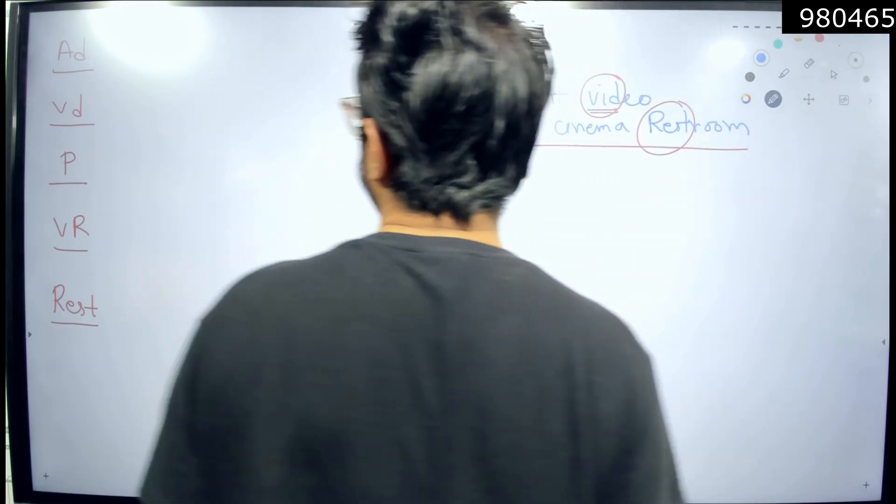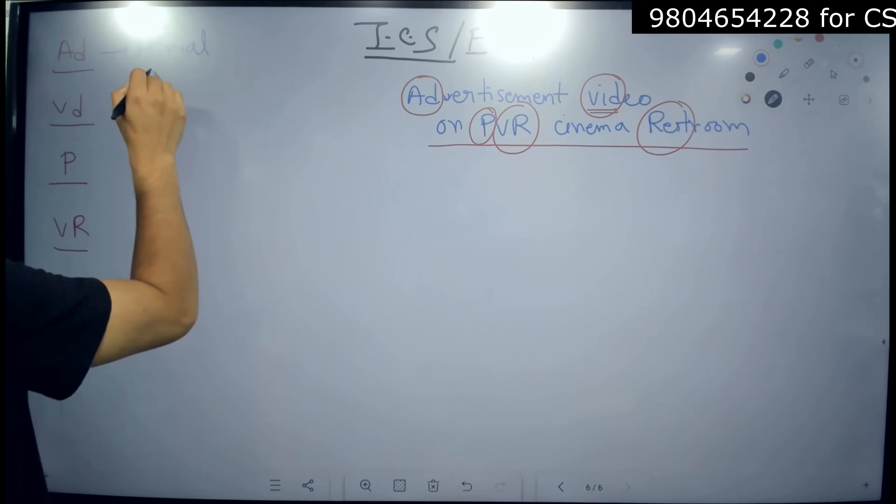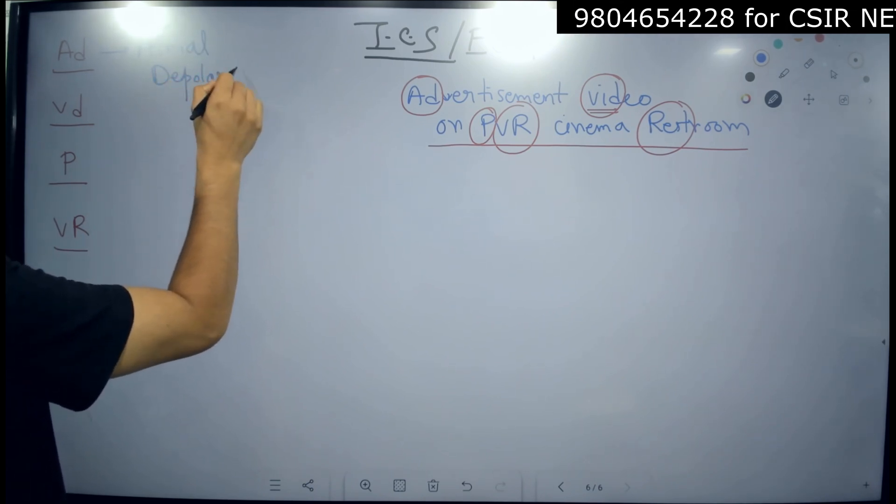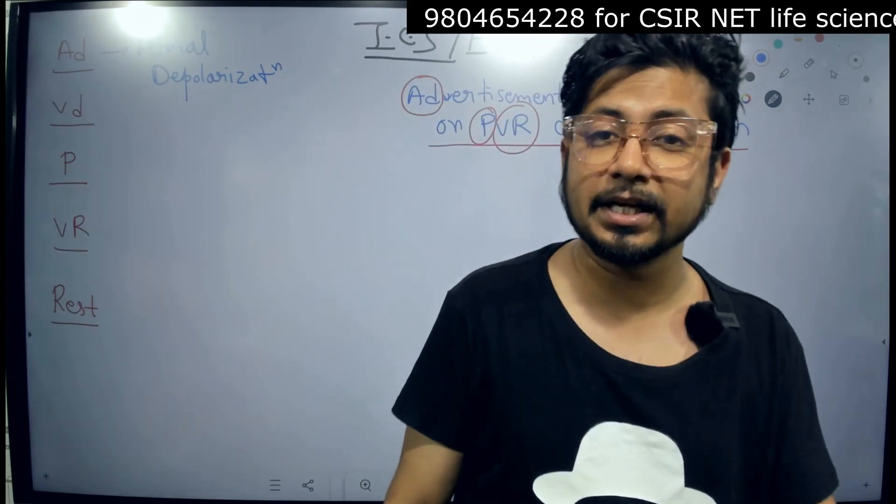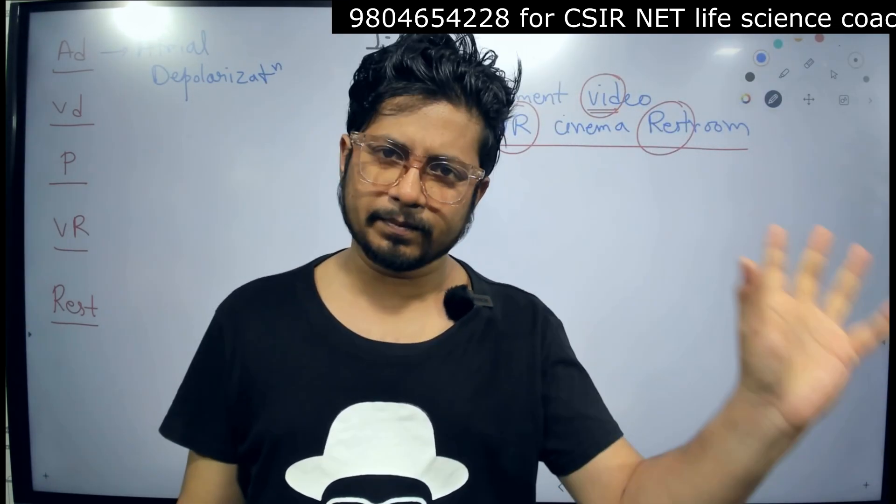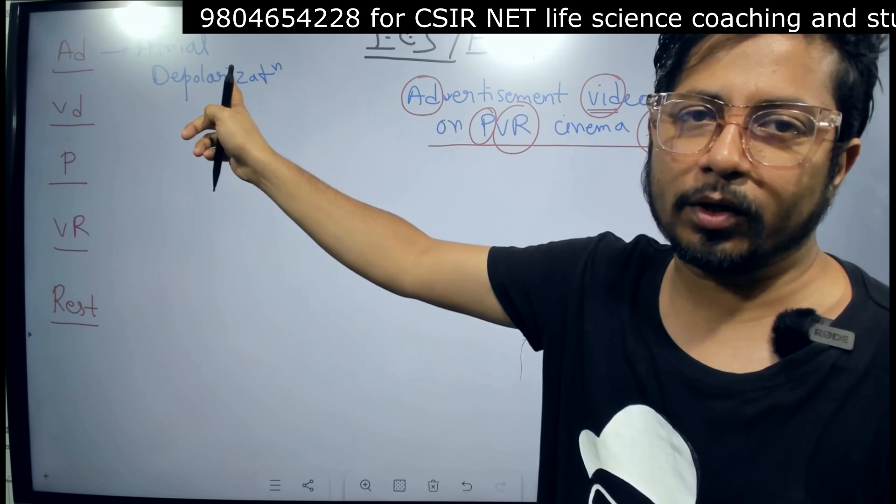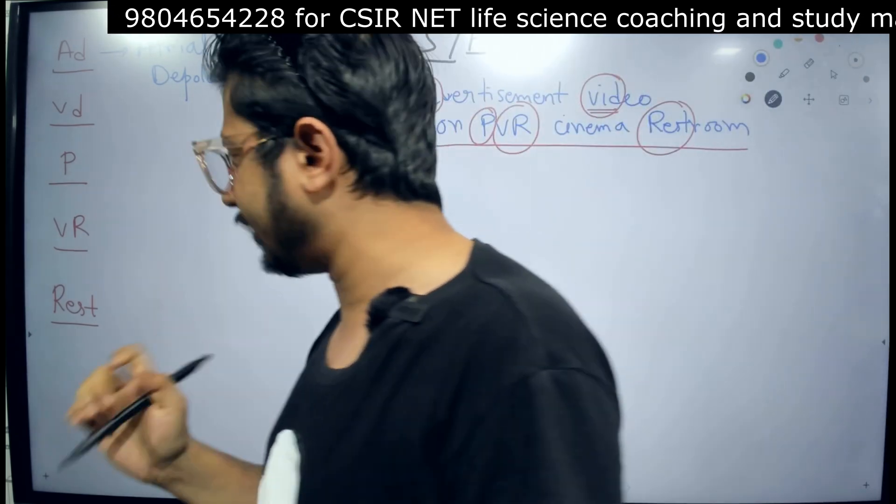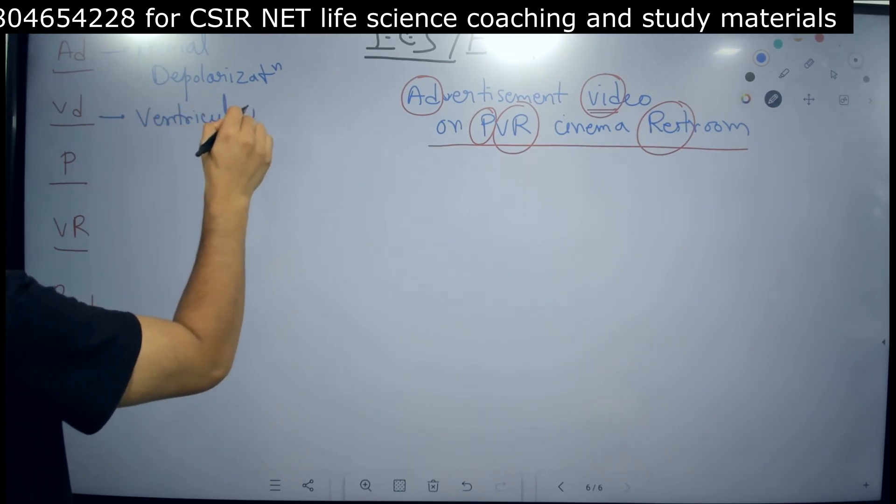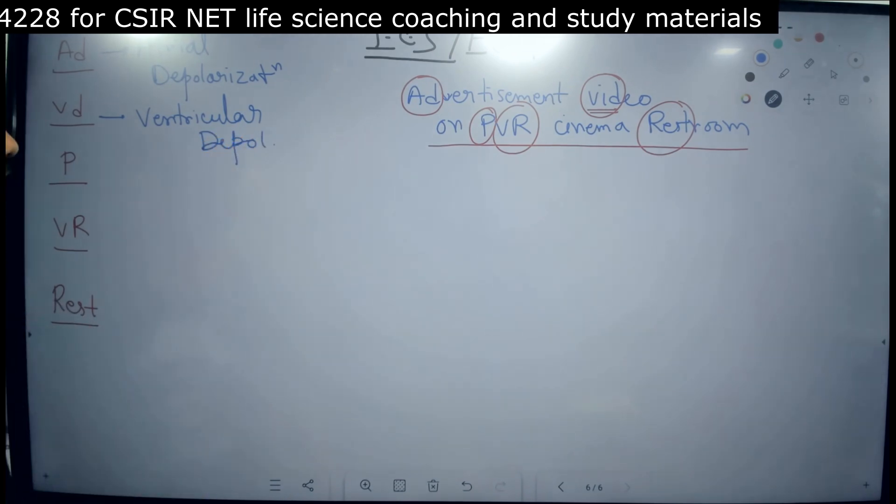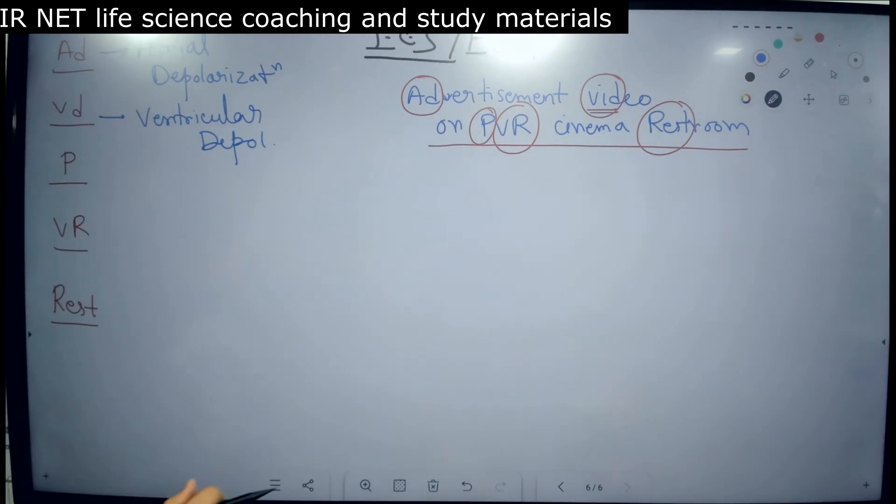So now I am going to assign the function to each of it. AD is remember atrial depolarization. I am not going to talk about what is depolarization, hyperpolarization. We have separate videos on that, much more details. But this is how to remember that in quick time. So AD means atrial depolarization. This is initial depolarization of the atria. Next is VD, ventricular depolarization.